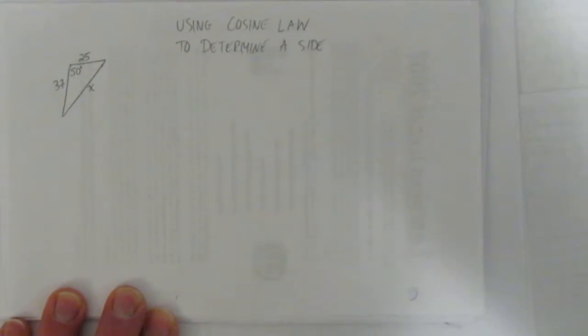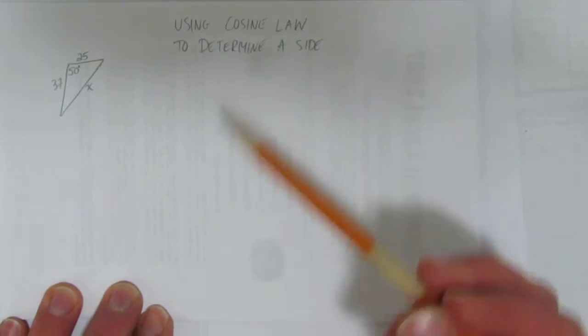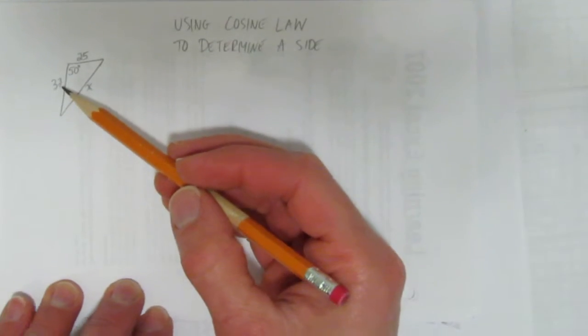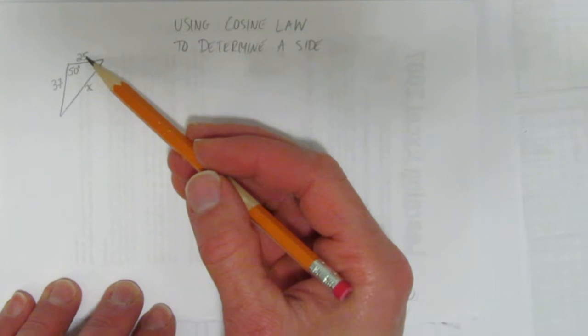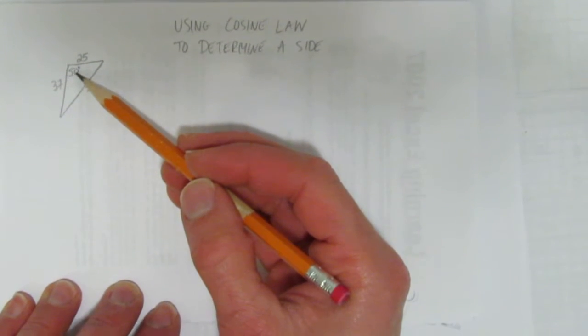In this video, we'll use cosine law to determine a side. You've been given a triangle. The triangle has a side of 37, a side of 25, and in between, an angle of 50 degrees.